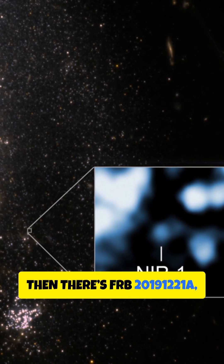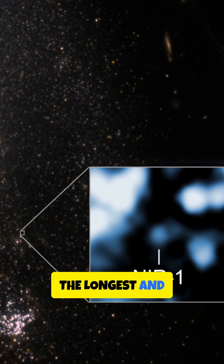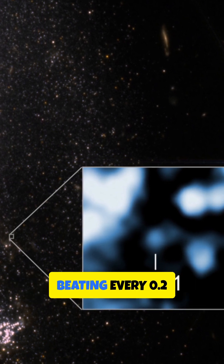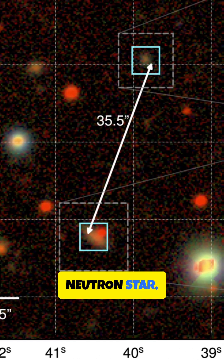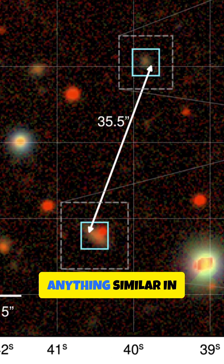Then there's FRB20191221A, the longest and most rhythmic burst ever. It pulsed for three seconds, beating every 0.2 seconds like a cosmic heart. Possibly from a neutron star, it's a million times brighter than anything similar in our galaxy.